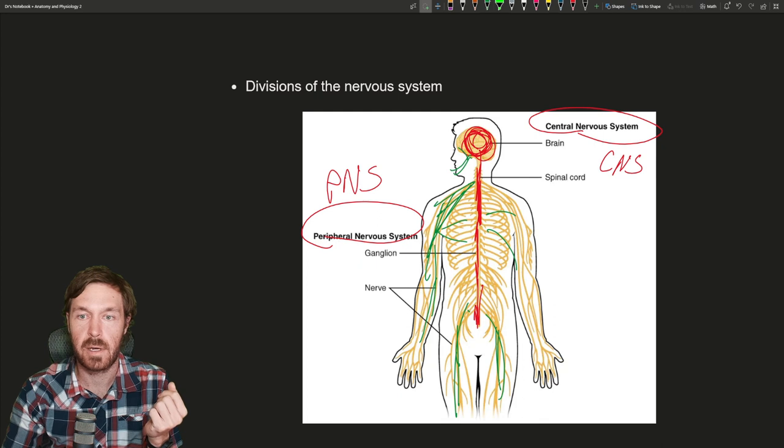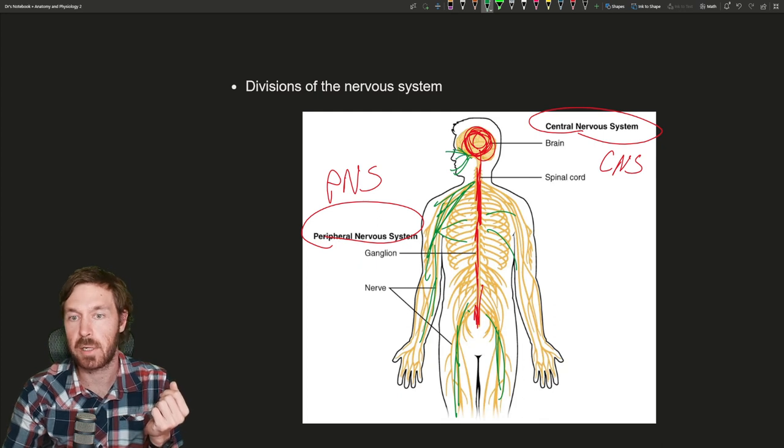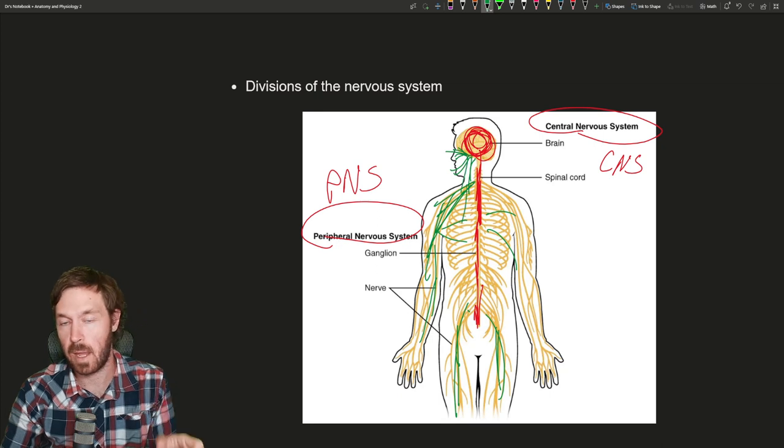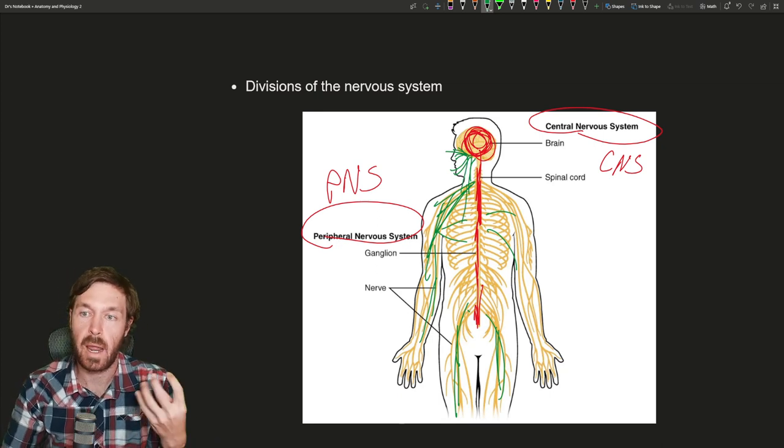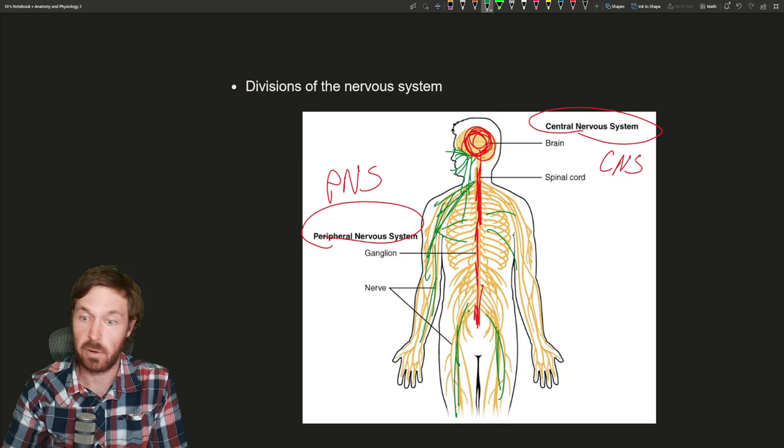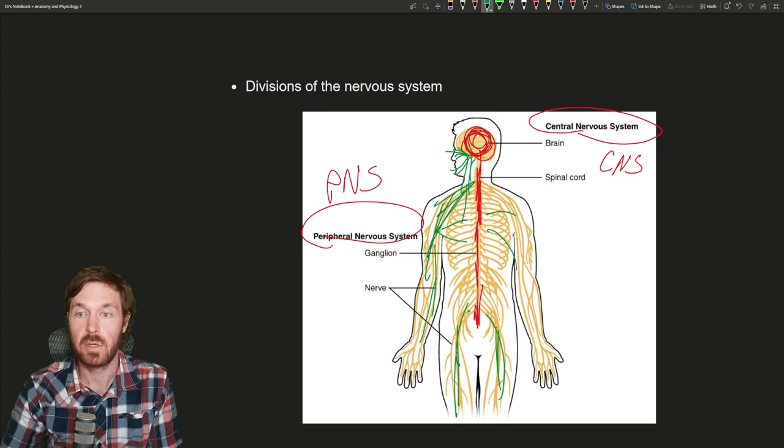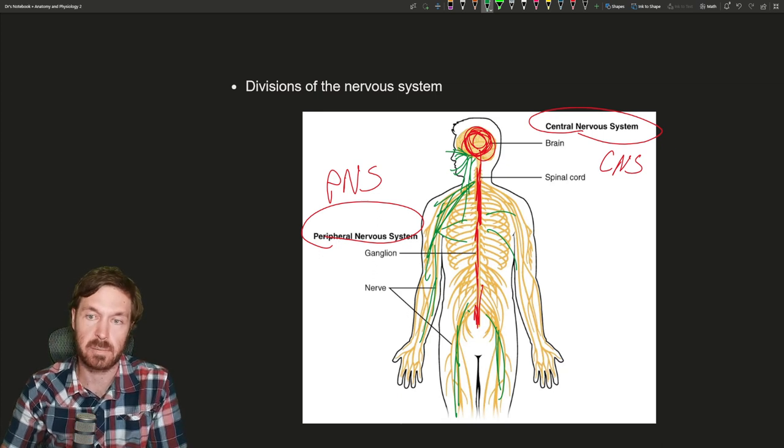You even have some cranial nerves up here, like your optic nerve, olfactory. You have the vagus nerve that comes down from the head. So you have these cranial nerves and your spinal nerves are the remaining nerves for the nervous system. Two main groups: central nervous system and peripheral nervous system.